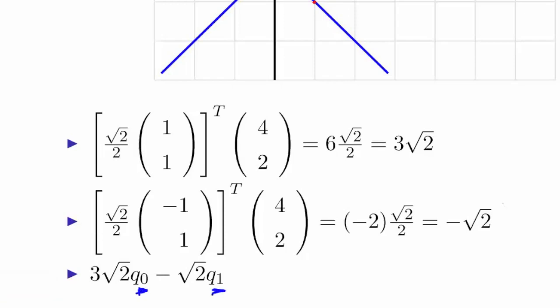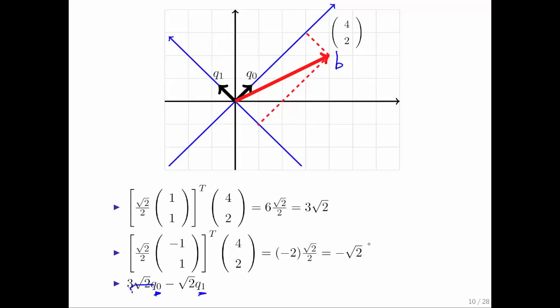What you conclude then is that in terms of these two basis vectors, the vector b can be written as 3 times the square root of 2 times q0 minus square root of 2 times q1. So the coefficients for q0 and q1 are 3 square root of 2 and minus square root of 2.